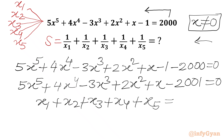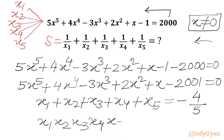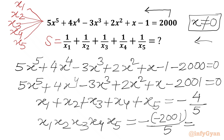By Vieta's formulas, the sum of roots x1 plus x2 plus x3 plus x4 plus x5 equals minus the coefficient of x to the power 4, which is minus 4, over the coefficient of x to the power 5, which is 5. The product of roots x1 times x2 times x3 times x4 times x5 equals minus the constant over the leading coefficient, giving us minus of (minus 2001) over 5, so the product of roots equals 2001 over 5.